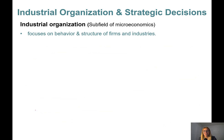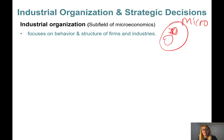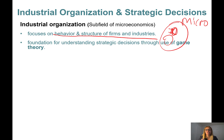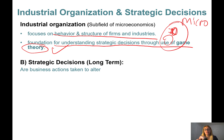Let's talk about industrial organization and strategic decisions. Industrial organization is a subfield of microeconomics that focuses on the behavior and structure of firms and industries and their strategic behaviors. For instance, Pepsi-Cola and Coca-Cola are two big competitors operating in an oligopolistic market, so how Pepsi-Cola behaves will have an impact on Coca-Cola's profits. Industrial organization is the foundation for understanding strategic decisions through use of what we call game theory, which you may have studied as an undergraduate or in an MBA-level economics course.